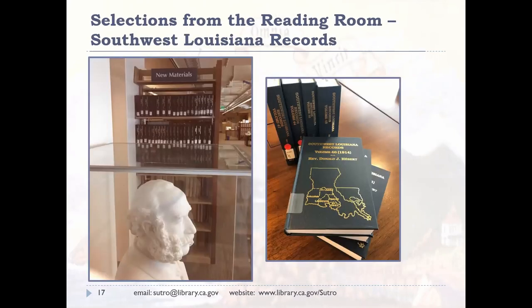Called the Father of Southwest Louisiana Genealogy, Reverend Donald Hebert compiled the definitive source for families with roots in Louisiana. His opus contains information meticulously extracted from Southwest Louisiana church and courthouse records spanning two centuries — from the 1750s to the 1950s — covering 13 parishes. It occupies three shelves in our reading room, arranged chronologically, and contains abstracts including births, marriages, baptisms, and deaths, as well as parish histories, cattle brands, maps, tombstone inscriptions, court transcripts, and photocopies of original documents. Through the help of the California State Library Foundation, we completed our set — we're now the only library west of Salt Lake City with all 52 volumes.